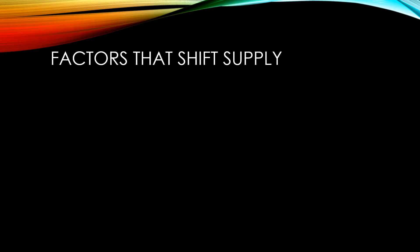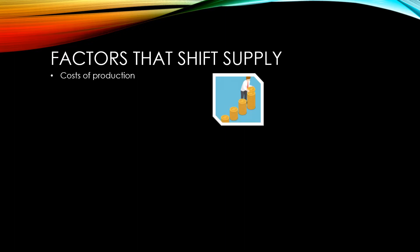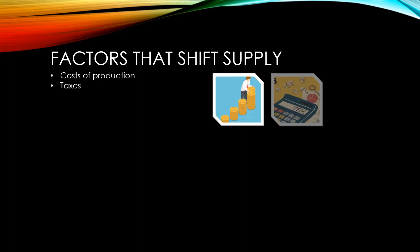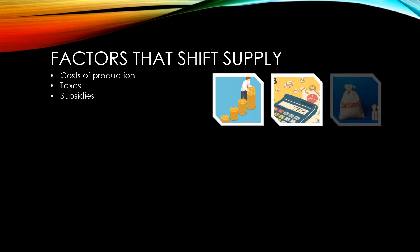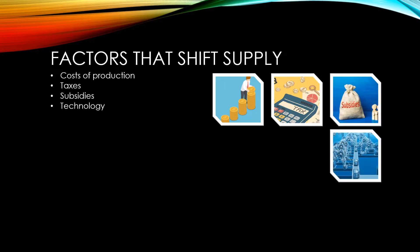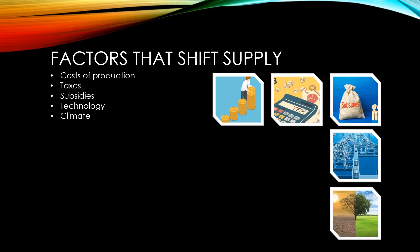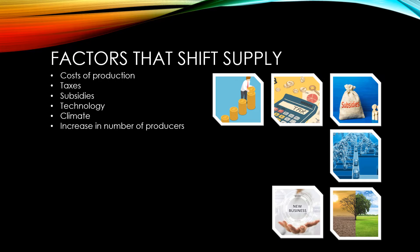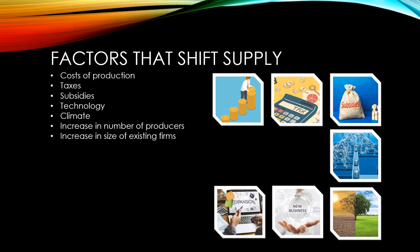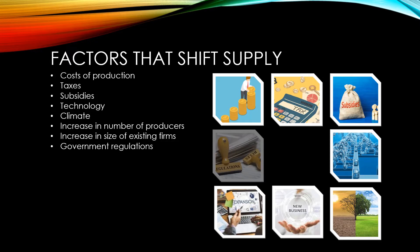The factors that can shift the supply curve are: changes in the cost of production, changes in the level of taxes, changes in the level of subsidies, changes in the technology available for the production of a product, changes in climate, an increase in the number of producers in the market, an increase in the size of an existing firm or firms, and an introduction of government regulations or a change to government regulations.